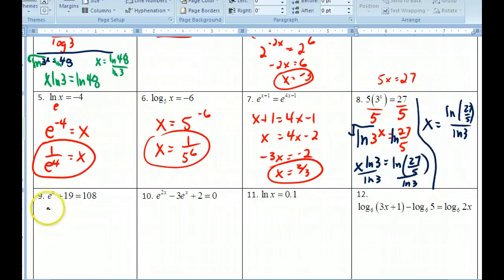Number 9. This one, get e to the x by itself. 19 from 108, that's going to challenge me here a little bit. And so that would be 89. So with this now, since the base is e, instead of using log with base 10, we're going to use log with base e. Let's take the ln of both sides. This cancels, so x equals ln 89.